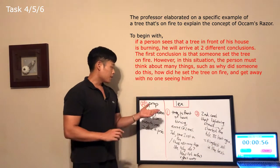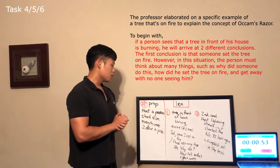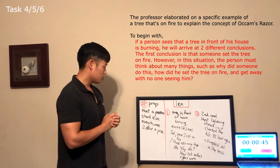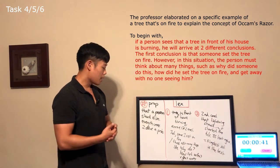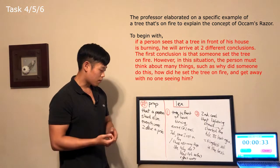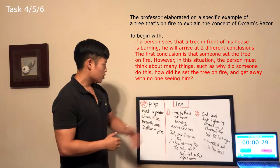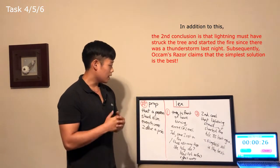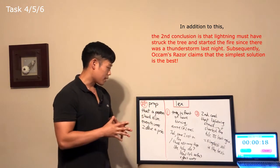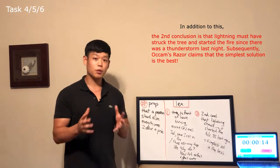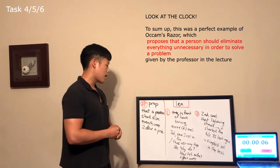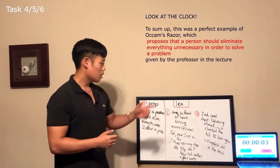The professor elaborated on a specific example of a tree that's on fire to explain the concept of Ocam's Razor. To begin with, if a person sees that a tree in front of his house is burning, he can arrive at two different conclusions. The first conclusion is that someone set the tree on fire. However, in this situation, the person must think about many things, such as: why did someone do this, how did someone set the tree on fire, and how did he get away with no one seeing him? In addition to this, the second conclusion is that lightning must have struck the tree and started the fire because there was a thunderstorm last night. Subsequently, Ocam's Razor says that the simplest solution is often the best. To sum up, this was a perfect example of Ocam's Razor, which proposes that a person should eliminate everything unnecessary in order to solve a problem, given by the professor in the lecture.